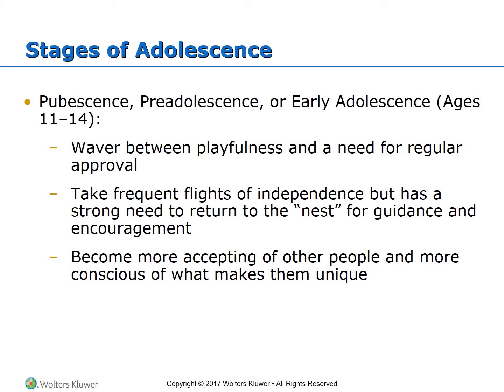Early adolescence is ages 11 to 14. Girls often mature faster than boys. This stage can be referred to as the awkward stage. The main characteristic is their desire for independence. They waver between the desire for independence and trust from their families, and silliness and playfulness and a need for regular approval. They take frequent flights of independence but have a strong need to return to the nest for guidance and encouragement. Patience is essential. They need strong family support. Sources of conflict can be invasion of household tasks, rebellion against authority figures, and quarrels with siblings.